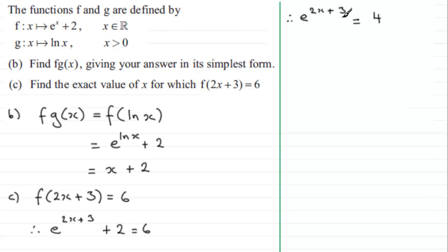Now I take natural logs to both sides here, so we take the natural log of the left hand side. That's e to the power 2x plus 3, and it's going to be equal to the natural log of 4.